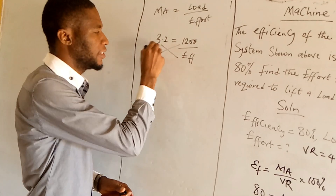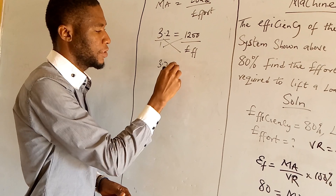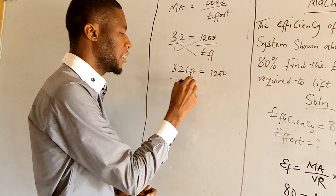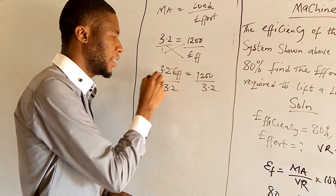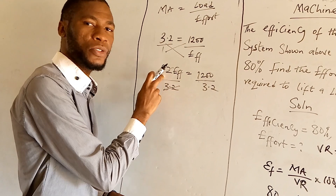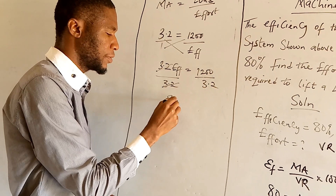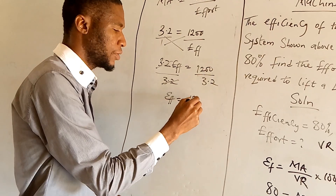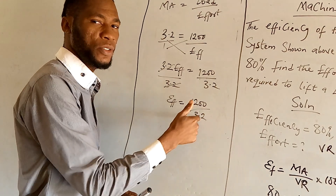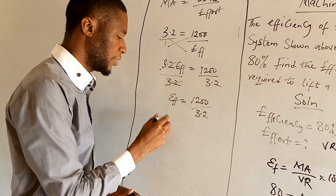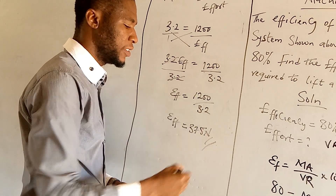When we cross-multiply — since effort is over 1 — we have 3.2 times effort equals 1,200. Dividing both sides by 3.2, the 3.2s cancel each other. Therefore, effort is equal to 1,200 over 3.2, which gives us effort equal to 375 Newton. That is the value of the effort.